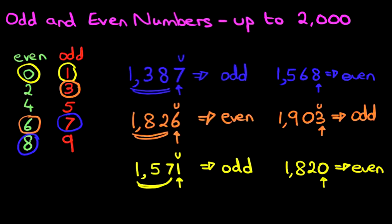And that is how we work out odd and even numbers with numbers up to 2,000.